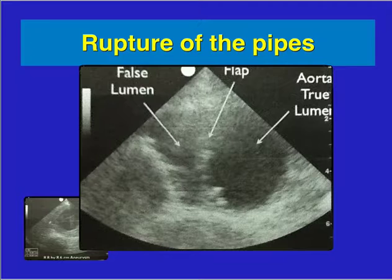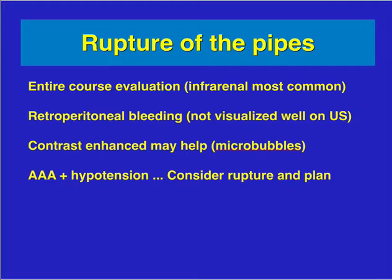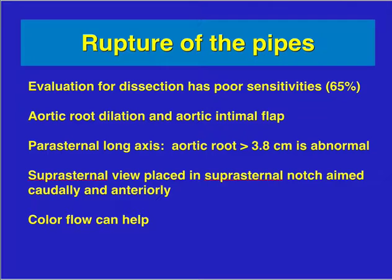A thrombus is sometimes hard to see, and a flap can also be found. After a complete course evaluation, retroperitoneal bleeding may not be visualized. If you find a triple-A with hypotension, seriously consider the patient has a rupture and plan accordingly. For dissection, look for aortic root dilation and an aortic intimal flap — in the parasternal long axis, an aortic root greater than 3.8 centimeters is abnormal. The suprasternal view is difficult to obtain, and color flow can sometimes help.